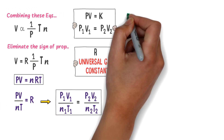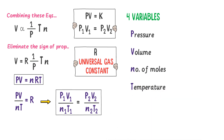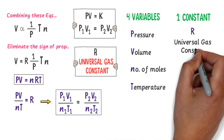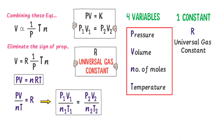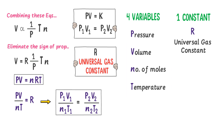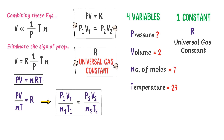There are four variables: pressure, volume, number of moles, and temperature, along with one universal gas constant R. Out of these four variables, the value of three would be given and we must find the one unknown. For example, if volume, number of moles, and temperature are given, we find pressure using the ideal gas equation.